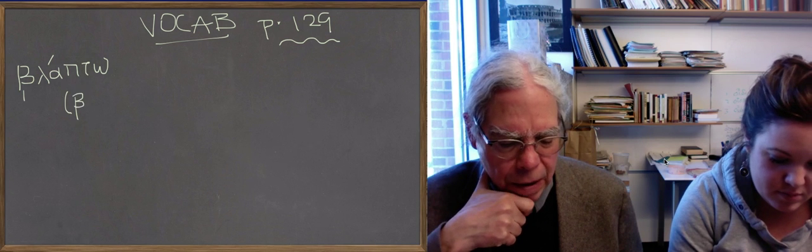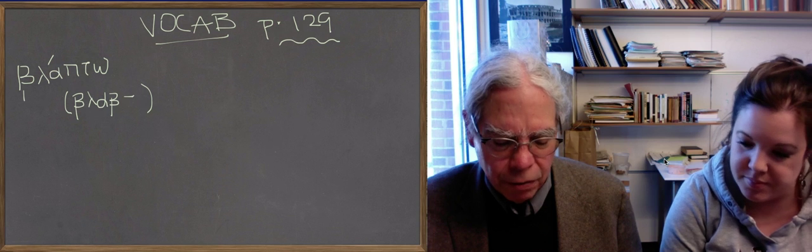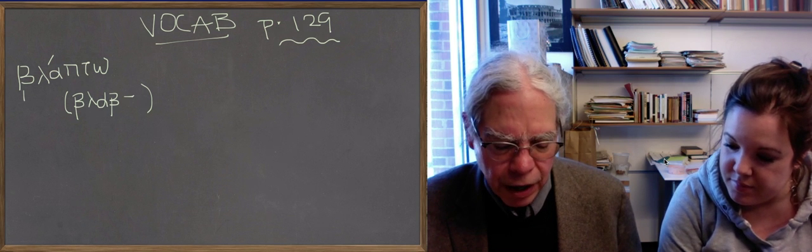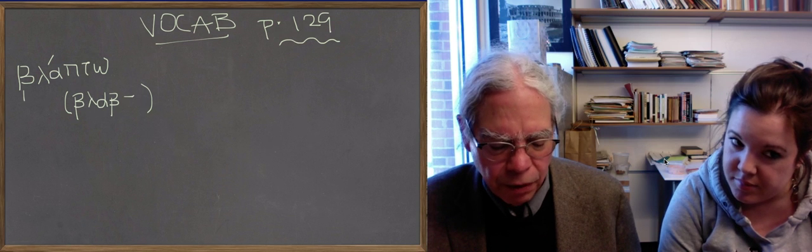There's a noun βλάβη, as I mentioned the other day. So we've got βλάπτω, βλάψω, ἔβλαψα, βέβλαφα. You've got a perfect with an aspirated, final aspirated consonant. The β has become a φ.